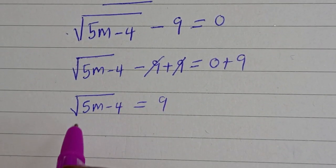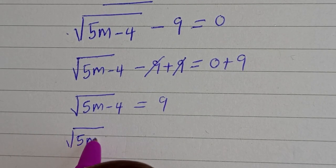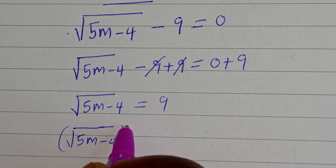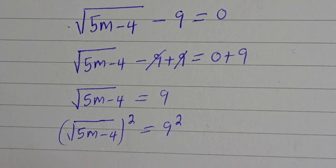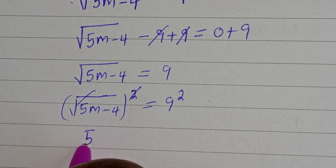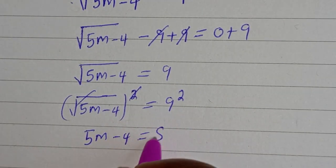Now let's square both sides of this equation. Square root of 5m minus 4 all squared is equal to 9 squared. This will cancel this. 5m minus 4 is equal to 9 squared is 81.